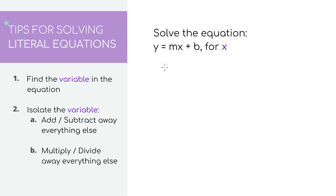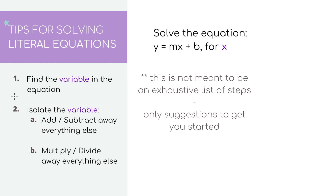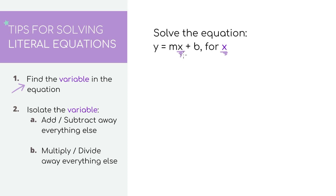Looking at the first example, this is actually the slope-intercept form of a linear equation. The first step is just to locate the variable x in the equation — in this case, it's right here on the right side. The next step is the same as any other equation: you need to isolate the variable so that x is on one side, and everything else including all the variables and numbers are on the other side.